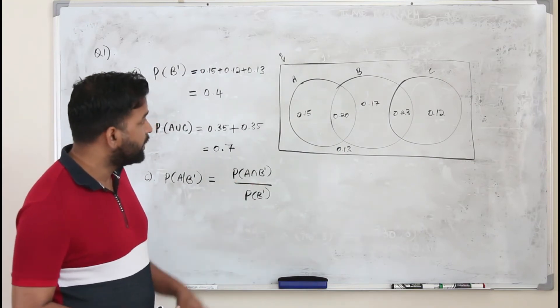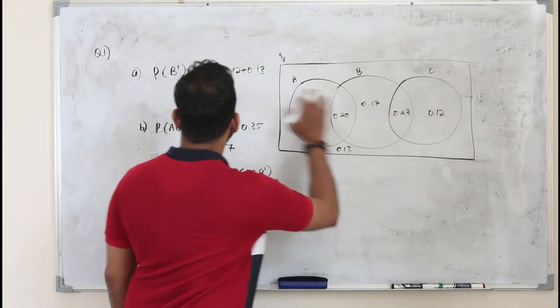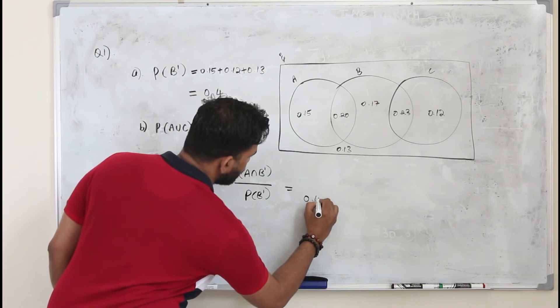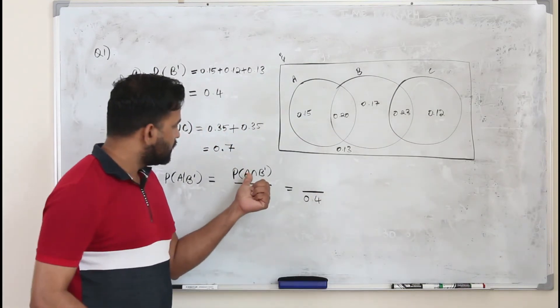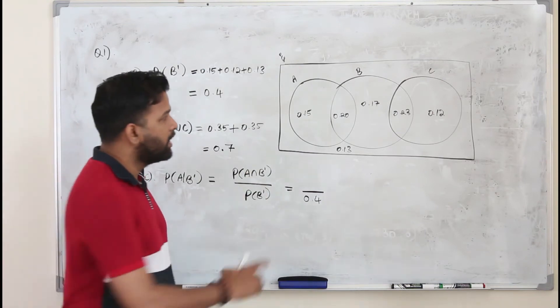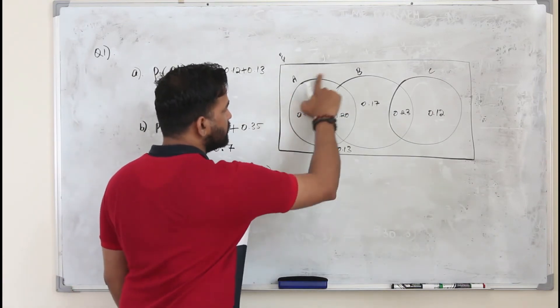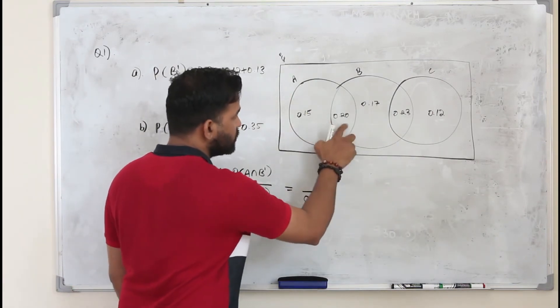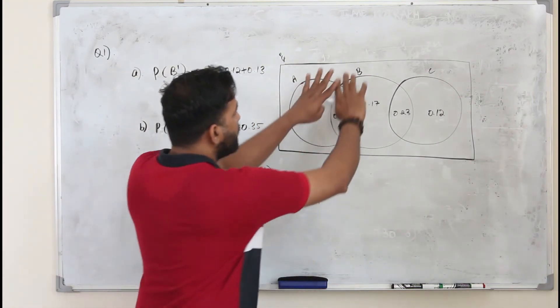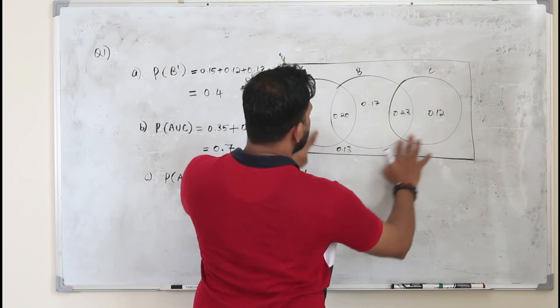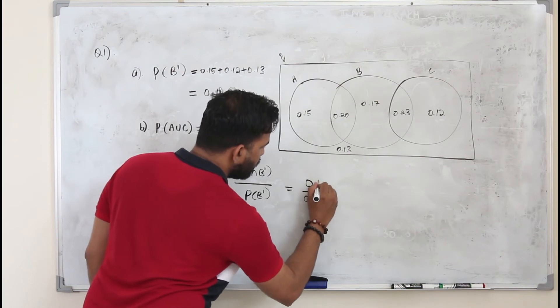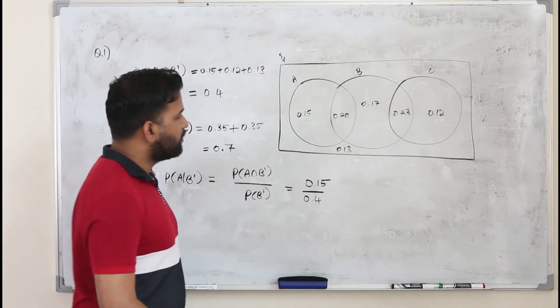You can either apply this formula. Find P of B dash. B dash is everything outside B, which we have here, which is 0.4. And the common region for B complement and A. A is this, this whole thing. There are two regions. B complement is everything except B. So everything outside B. So the intersection of A and B complement is only this region, 0.15 divided by 0.4.